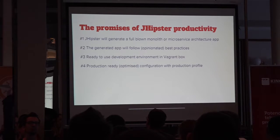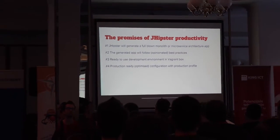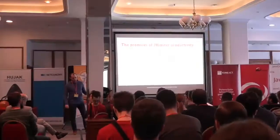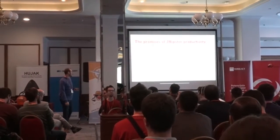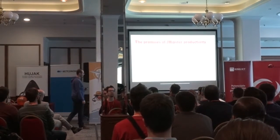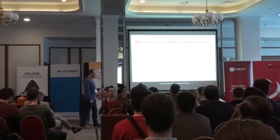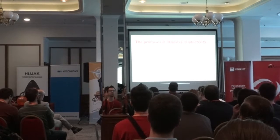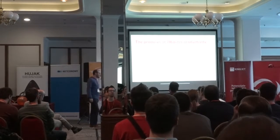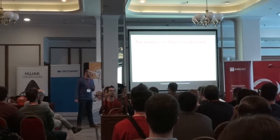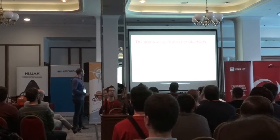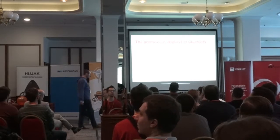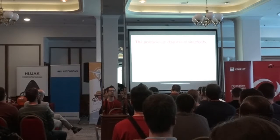If you want to start developing with JHipster, you will need to install some things like JHipster itself, Node.js, Java, Maven, Gradle, and all sorts of additional tools — and that can be a very tedious process. So the JHipster team made a development environment inside a Vagrant box, which is based on Debian Linux distribution, which has everything pre-installed, configured, and ready to use.